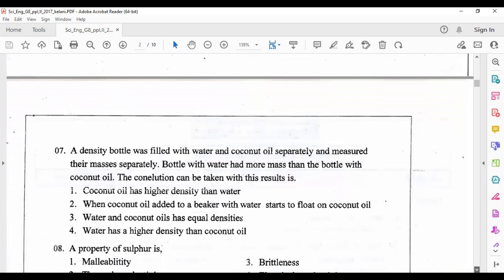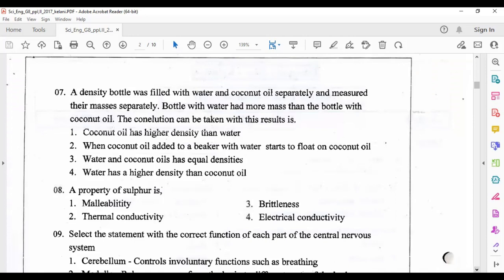Question seven: a density bottle was filled with water and coconut oil separately and measured their masses separately. Bottle with water had more mass than the bottle with coconut oil. The conclusion that can be taken from this result is: if the mass of a unit volume is high, that means the density is high. So answer number four is correct: water has a higher density than coconut oil.